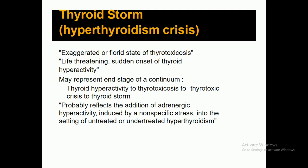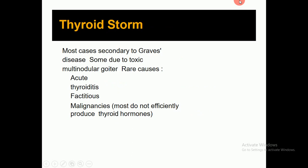Thyroid storm, also called hyperthyroid crisis, is an exaggerated or florid state of thyrotoxicosis and a life-threatening condition. Sudden onset of thyroid hyperactivity occurs and may represent the end-stage continuum: thyroid hyperactivity → thyrotoxicosis → thyrotoxic crisis → thyroid storm. It probably reflects the addition of adrenergic hyperactivity induced by non-specific stress in the setting of untreated or under-treated hyperthyroidism. Most cases are secondary to Graves' disease, some due to toxic multinodular goiter, and rarely acute thyroiditis.